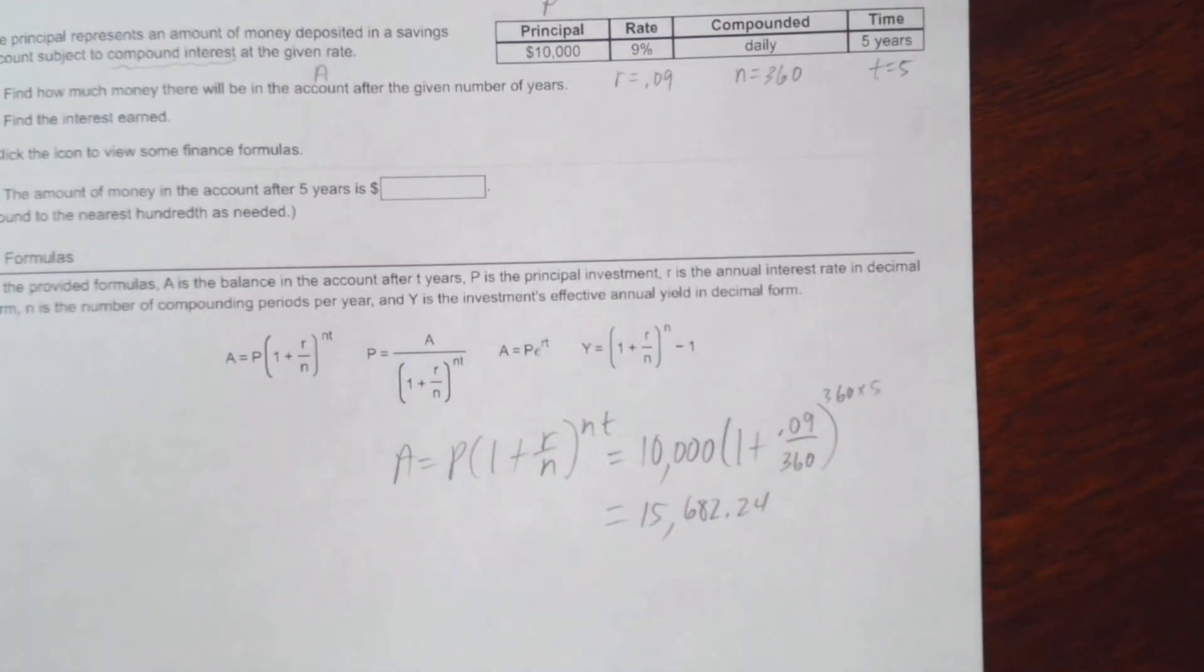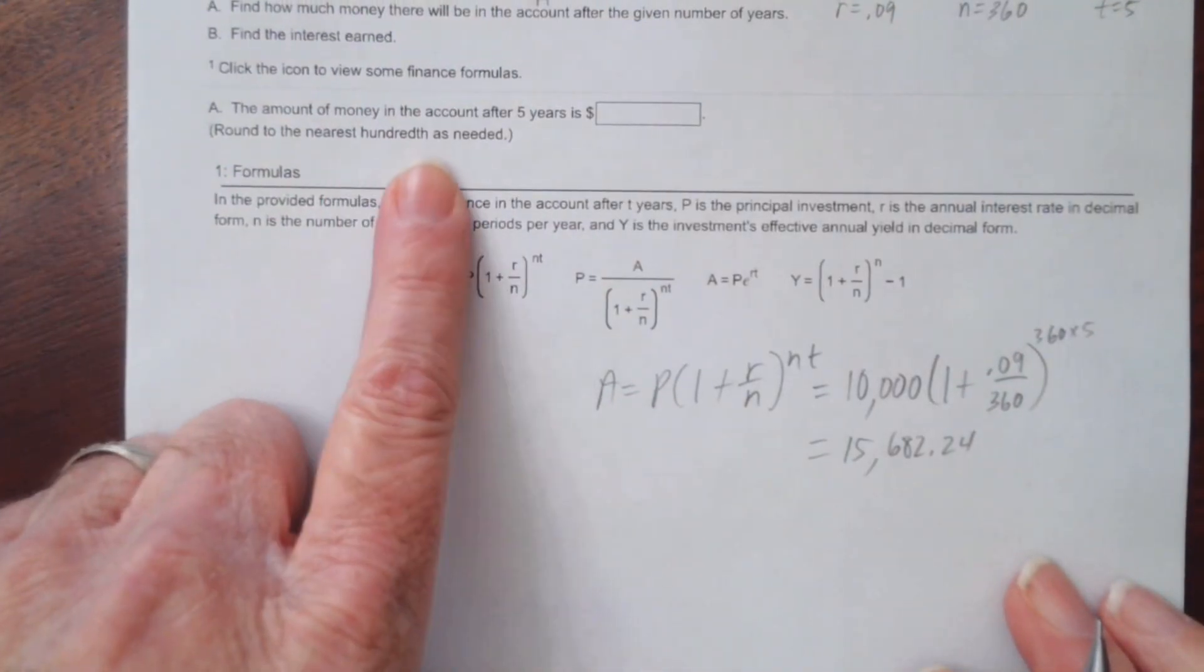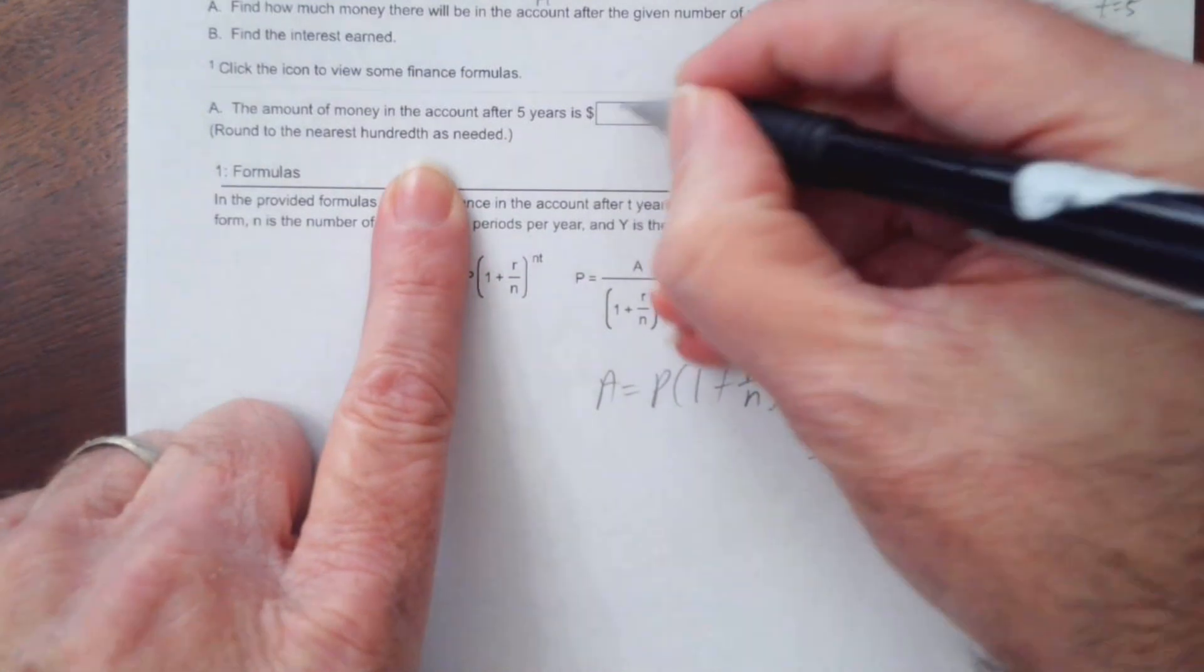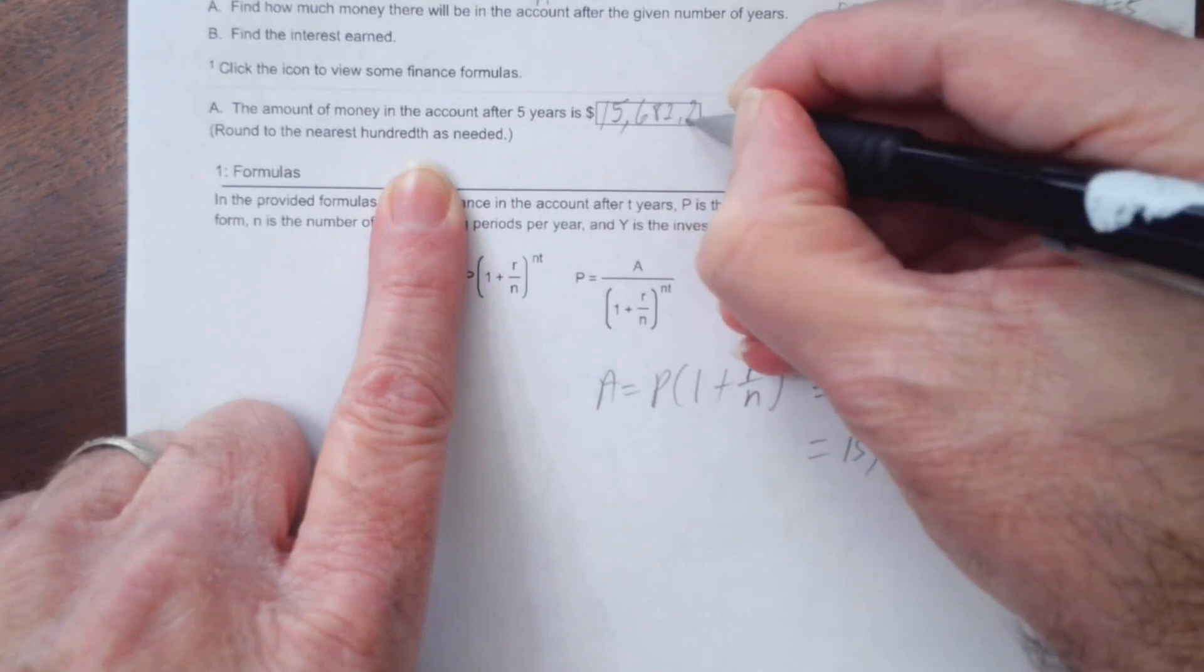Now let's see what they said here. Rounded to the nearest hundredth. So that's to the nearest cent. So it is $15,682.24.